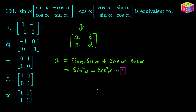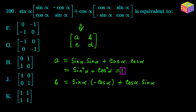Now let's calculate B, the second element on the first row of the result matrix. B will be equal to sin(α) × (-cos(α)) from the first matrix plus cos(α) × sin(α) from the second matrix. If you look at it, the two terms are the same — sin(α)·cos(α) — but one is negative and the other is positive, so they cancel each other. B is equal to 0.